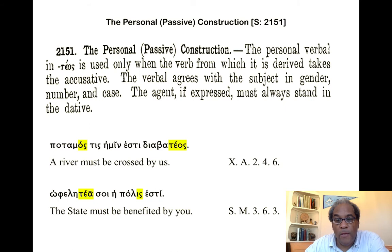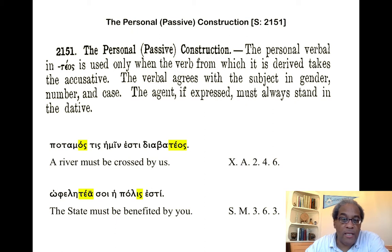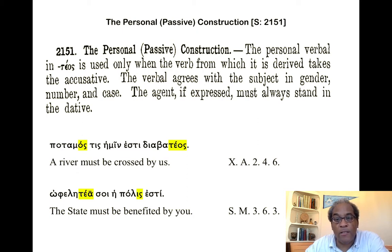Here, the first example from Xenophon: potamos tis hēmin estin diabateos — 'A river must be crossed by us.' You see that potamos tis is masculine, singular, nominative, and so too diabateos agrees with that in gender, number, and case. The hēmin expresses the agent in the dative.